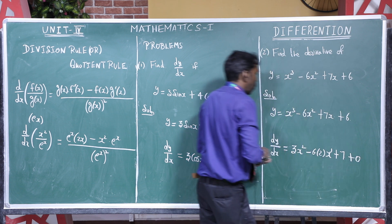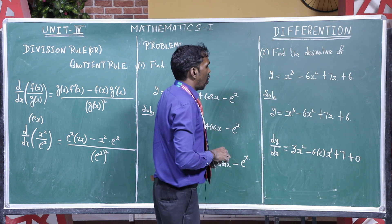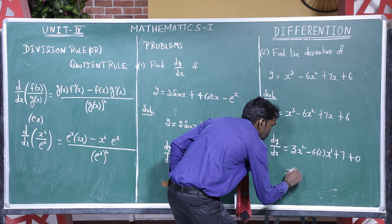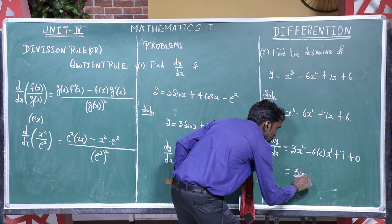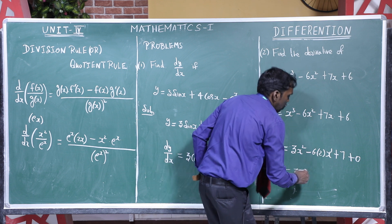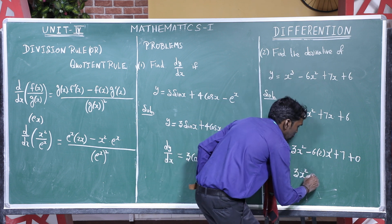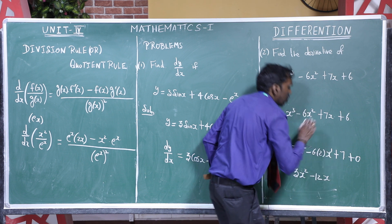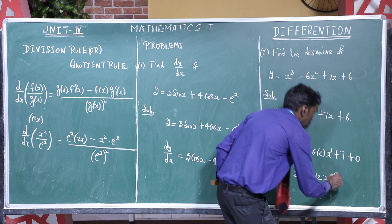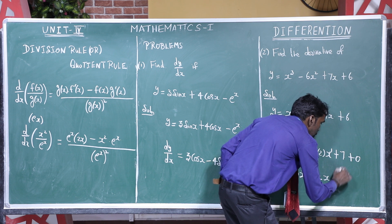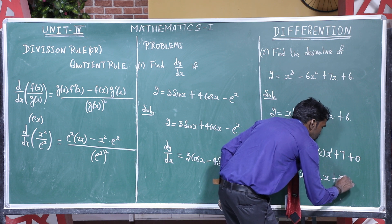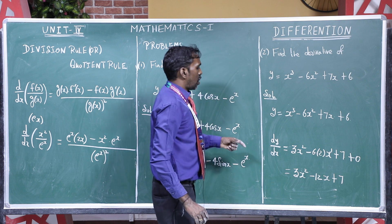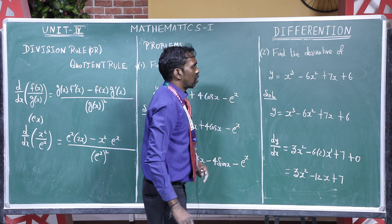Finally, simplifying: dy/dx = 3x² − 12x + 7. The derivative of the constant 6 is 0, so it drops out. Therefore the derivative is 3x² − 12x + 7.